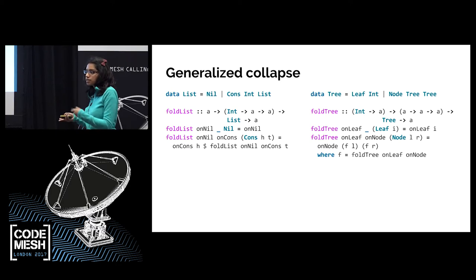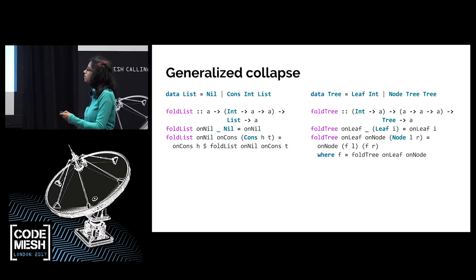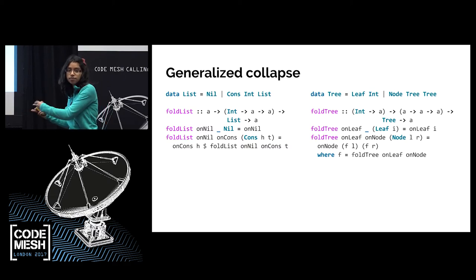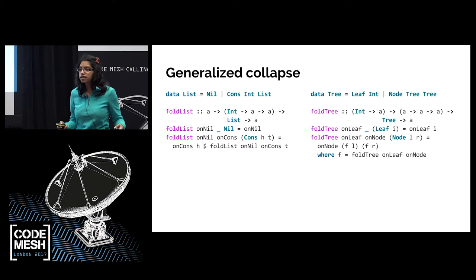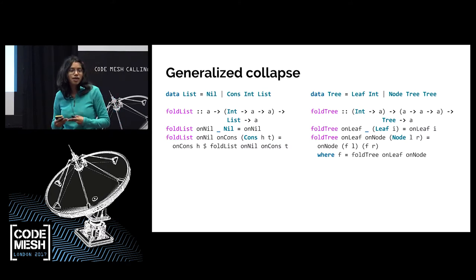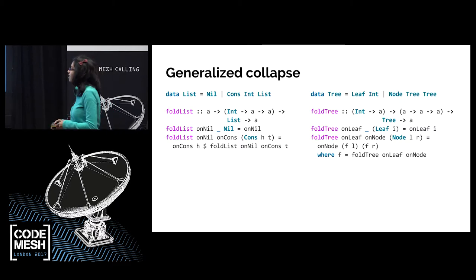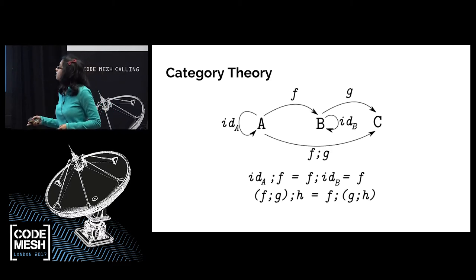If you take a look at these two data structures and these two fold functions, they're pretty similar. In both of them I have to deal with each case — nil and cons for the list, leaf and node for the tree — and both collapse them. If I posed the problem: how would you generalize this? Could you write a single function that does the job of both folds? It's hard to make a start on that. Maybe we could use Idris and dependent types — it seems to be the solution to almost all our problems. But there's actually a better solution: we're going to use category theory.